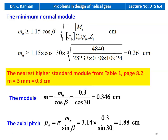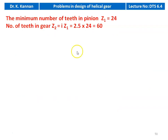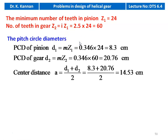The transverse module M = M_n / cos(beta) = 0.3 / cos(30°) = 0.346 cm. Axial pitch P_A = π × M_n / sin(beta) = 3.14 × 0.3 / sin(30°) = 1.88 cm. Number of teeth on pinion Z1 = 24 (given); on gear Z2 = i × Z1 = 2.5 × 24 = 60. PCD of pinion D1 = M × Z1 = 0.346 × 24 = 8.3 cm. PCD of gear D2 = M × Z2 = 0.346 × 60 = 20.76 cm. Center distance A = (D1 + D2)/2 = (8.3 + 20.76)/2 = 14.53 cm.